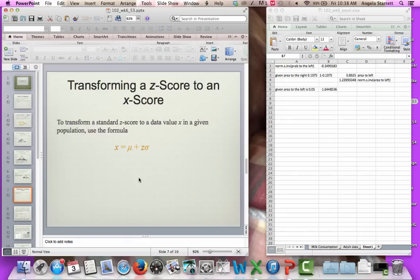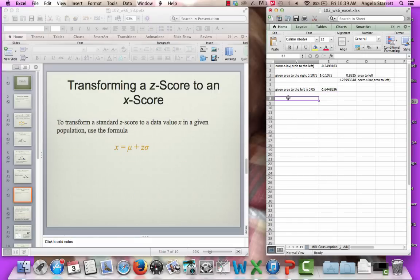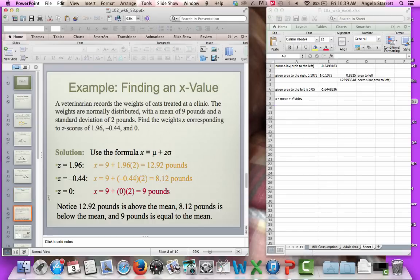Now let's talk about going backwards, transforming a z-score to an x-score. Remember we had our z-score formula of x minus the mean divided by the standard deviation. If we solve that for x, we're going to get our formula here of x equals the mean plus z times the standard deviation. Let's just play with this formula a little bit. We have x equals mean plus z times standard deviation.